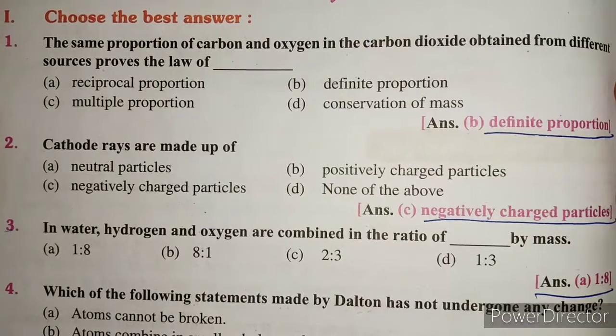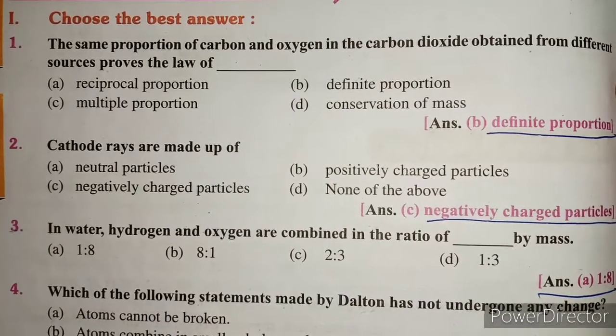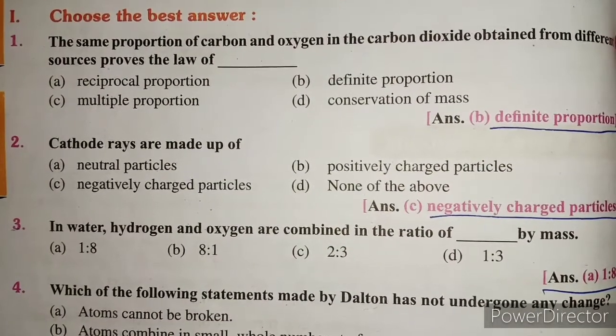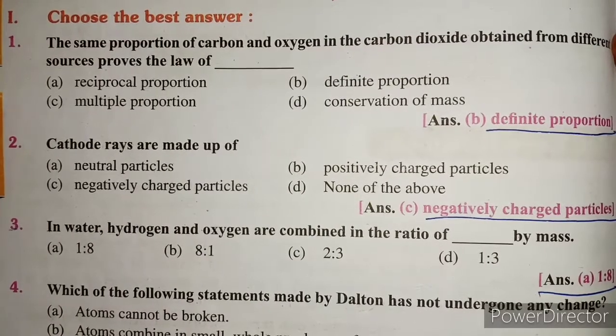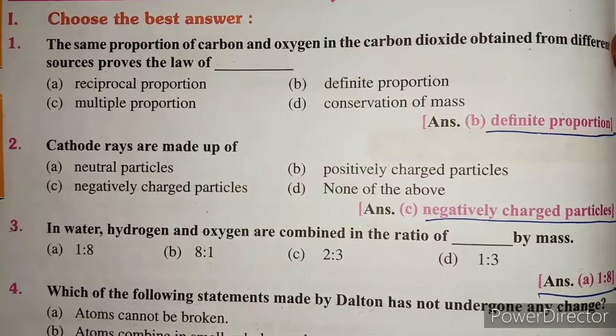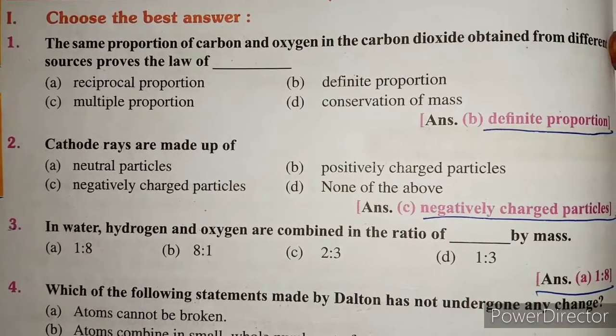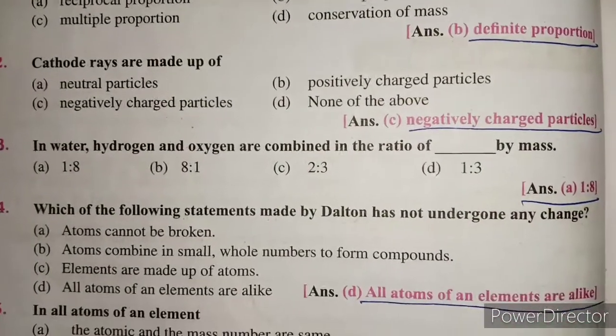Question 2: Cathode rays are made up of negatively charged particles. Question 3: In water, hydrogen and oxygen are combined in the ratio of 1 by 8 by mass.